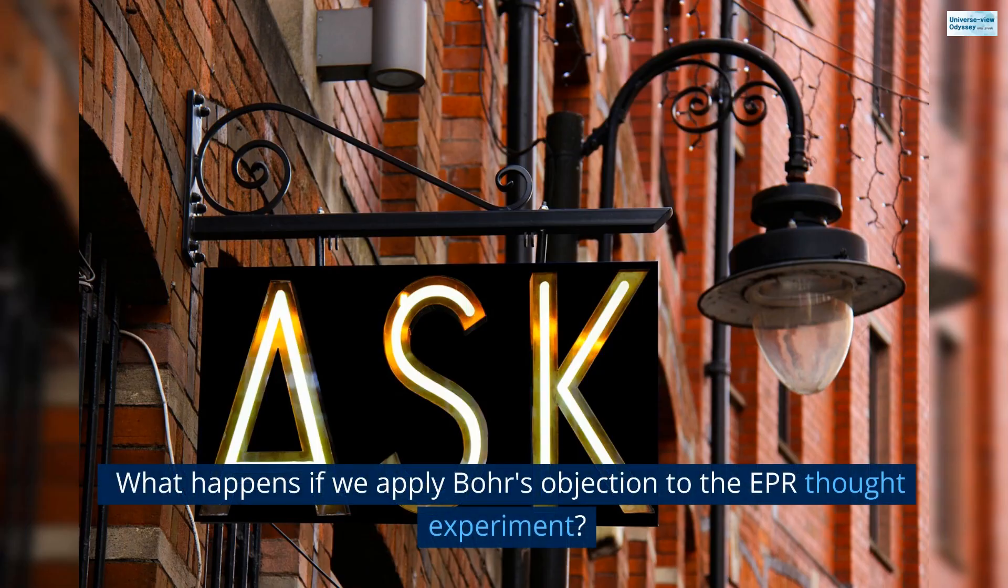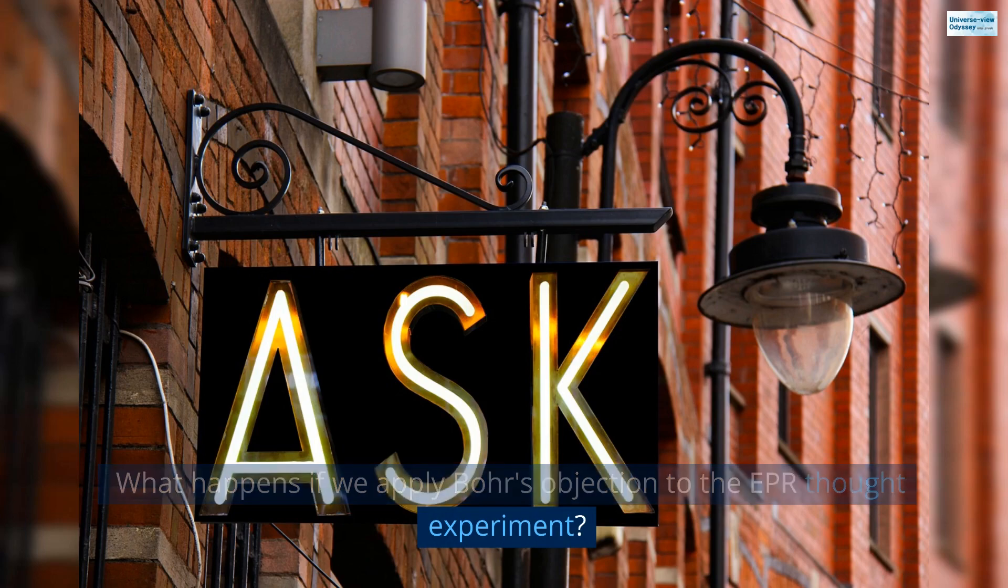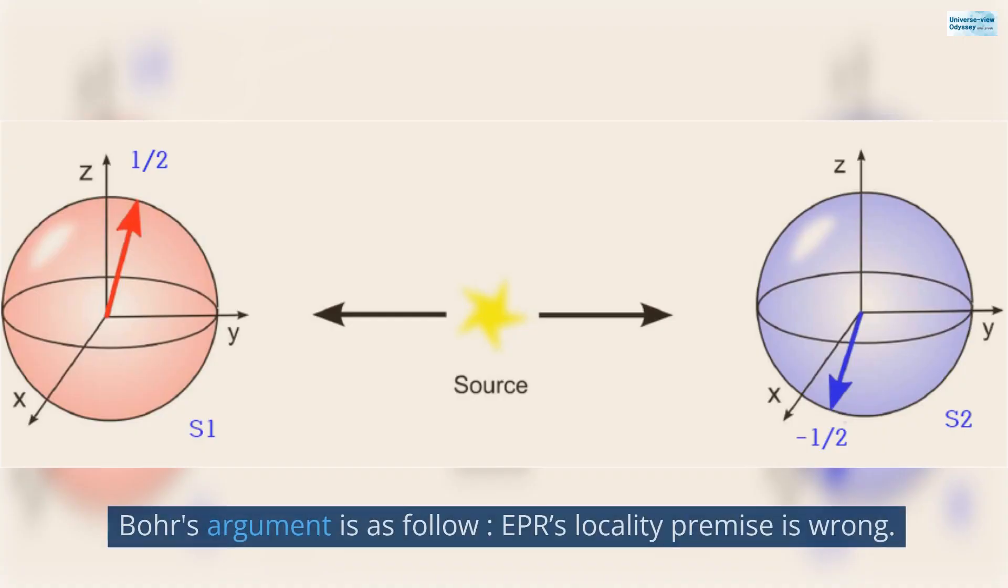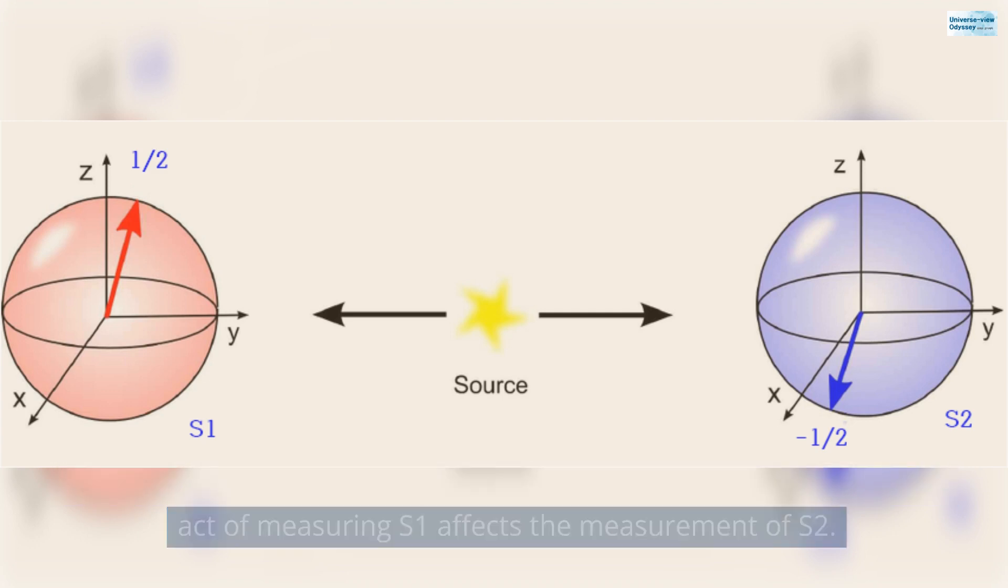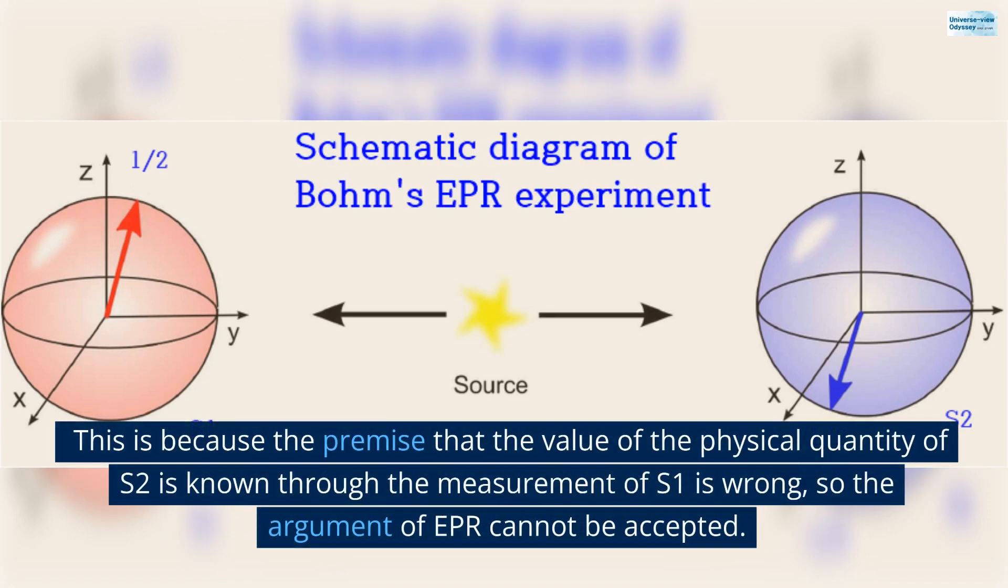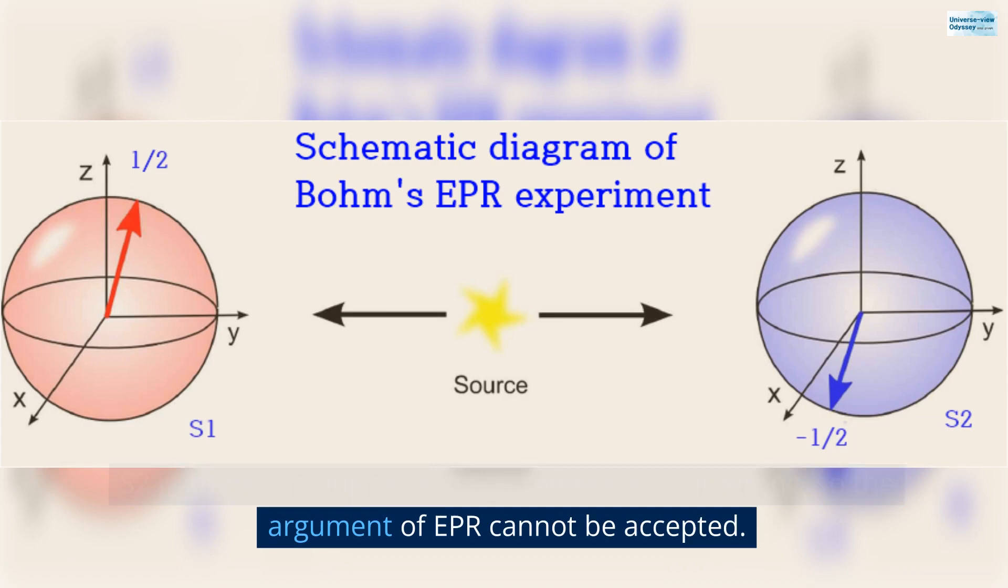What happens if we apply Bohr's objection to the EPR thought experiment? Bohr's argument is as follow. EPR's locality premise is wrong. The wave functions of S1 and S2 exist throughout the universe, so the act of measuring S1 affects the measurement of S2. This is because the premise that the value of the physical quantity of S2 is known through the measurement of S1 is wrong, so the argument of EPR cannot be accepted.